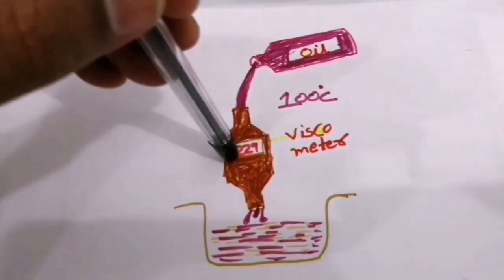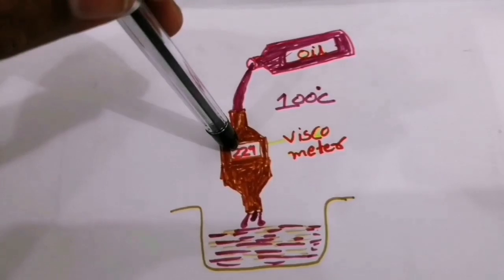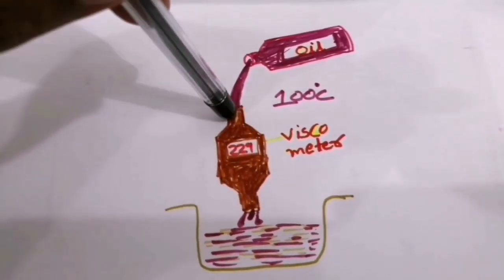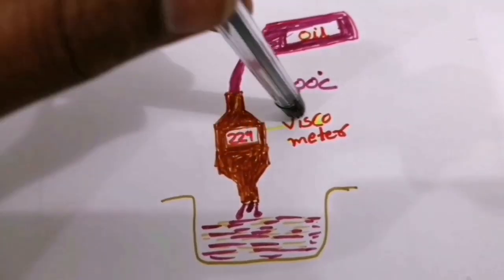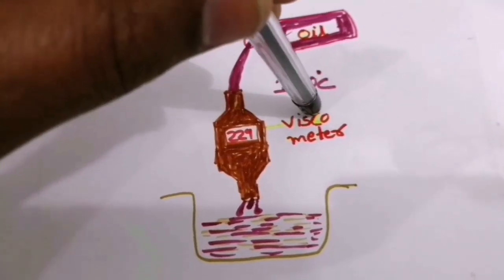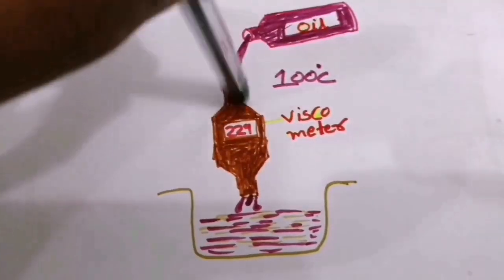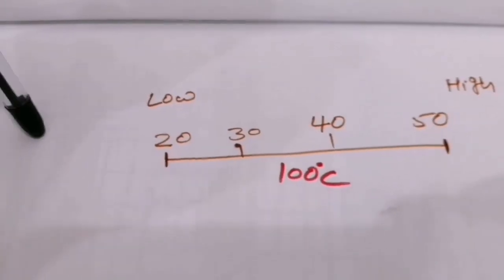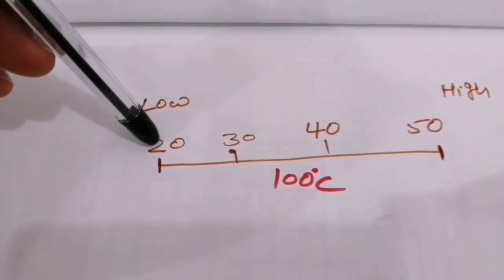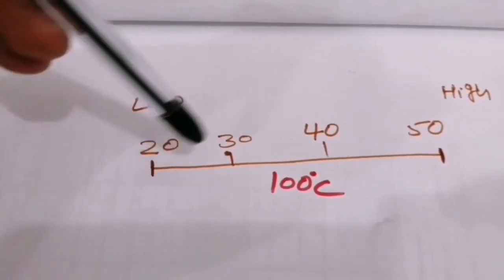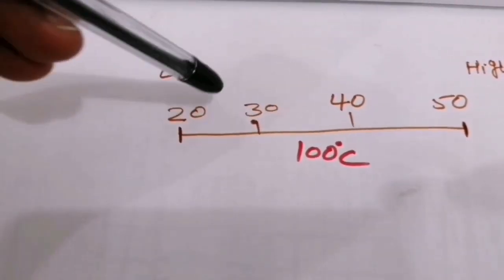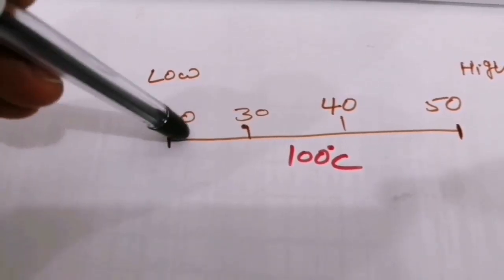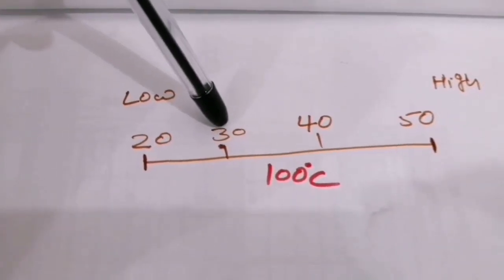Viscosity is measured using a viscometer. At 100 degrees temperature, the oil is tested in a viscometer and a reading is collected. This reading tells us the oil's viscosity — its thickness — at operating temperature. The viscosity grades include 30, 40, 50, 80, and others.